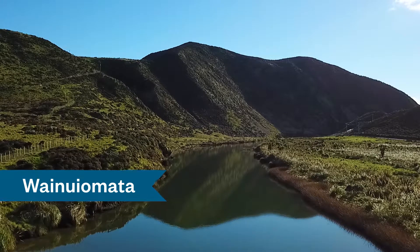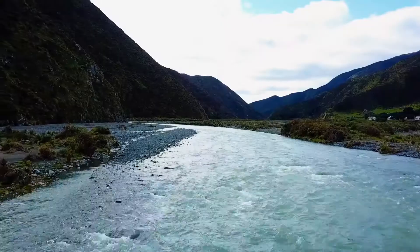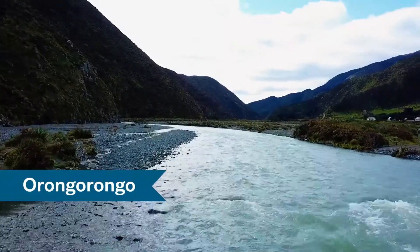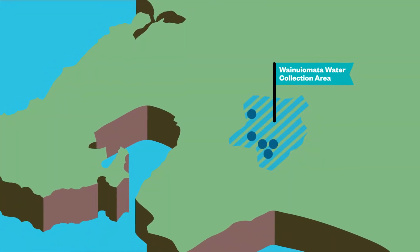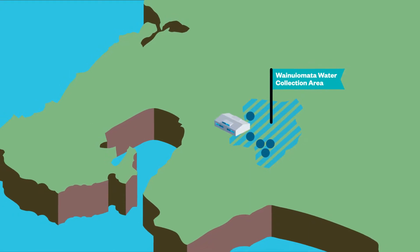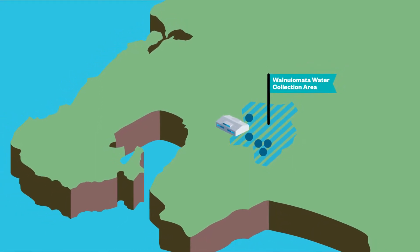The third source is combined water from the Wainui o Mata and Orongoronga Rivers, located in the Rimutaka Ranges. Five weirs take water from the rivers and pipe them to the Wainui o Mata Drinking Water Treatment Plant.